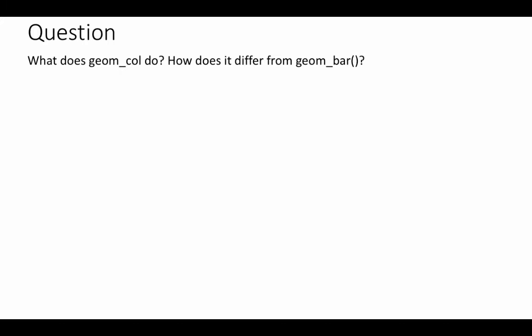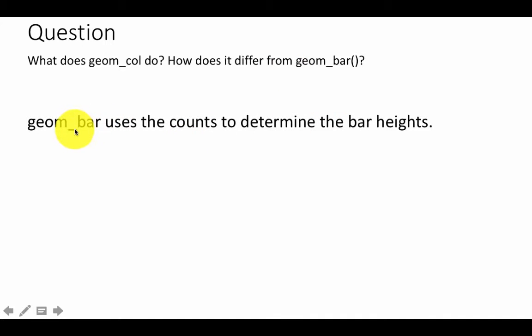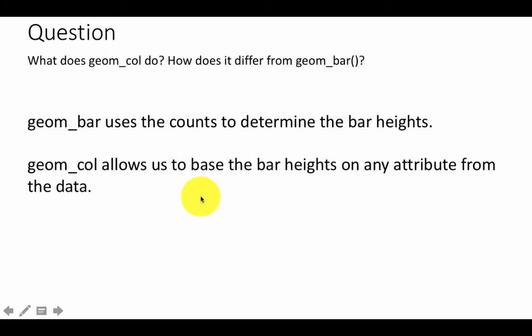Now I'm putting some questions up here for you to explore. There's something called geom_col. In the last class I asked you to download the ggplot cheat sheet — look at it and do some experimentation. What does geom_col do and how does it differ from geom_bar? Geom_bar takes x equals something and creates counts based on that x variable, and the counts determine the bar heights. Whereas geom_col allows us to base the bar heights on any attribute from the data without any transformation.